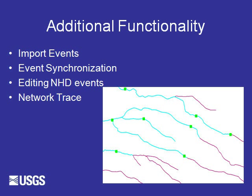Editing NHD events can be used to add gauges, dams, and water quality stations that should be incorporated into the NHD national data set. And network trace, which could be used to find a path through braids, trace the path of contaminants, or model the spread of an invasive species.